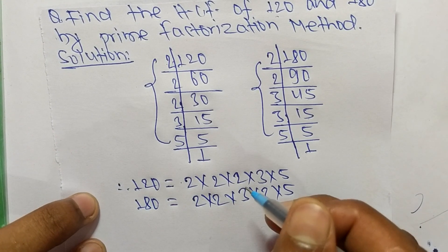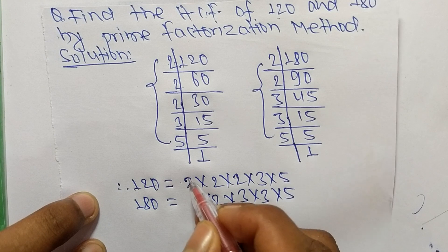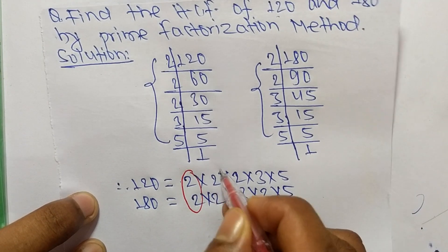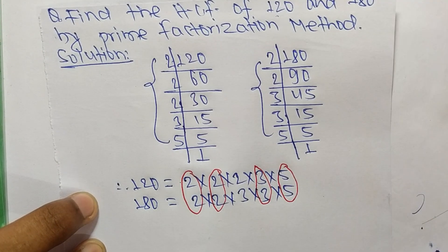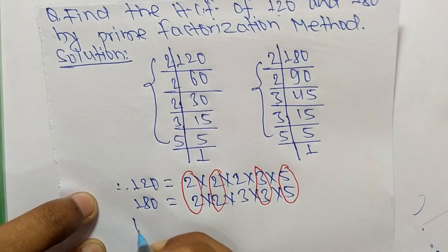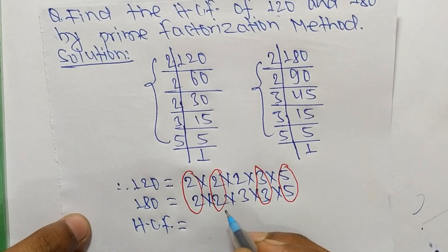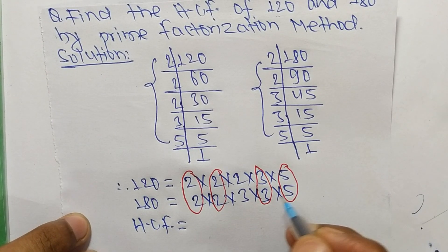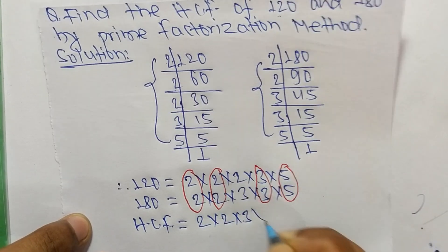Now we select the common factors in this prime factorization. The common factors we have are 2, 2, 3, and 5. So HCF is equal to the product of common factors.